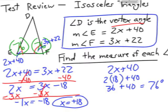What would the vertex angle be? That's right, all three angles add up to 180. So we subtract 180 minus 76 minus 76 and we get 28 degrees. The three angles are 76, 76, and 28.